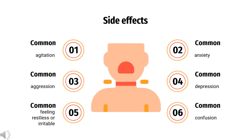What are the side effects of taking Zafirlukast? Side effects include: agitation, aggression, feeling restless or irritable, anxiety, depression, confusion, problems with memory or attention, stuttering, tremors, uncontrolled muscle movements, suicidal thoughts or actions, hallucinations, sleep problems, vivid dreams, and sleepwalking.